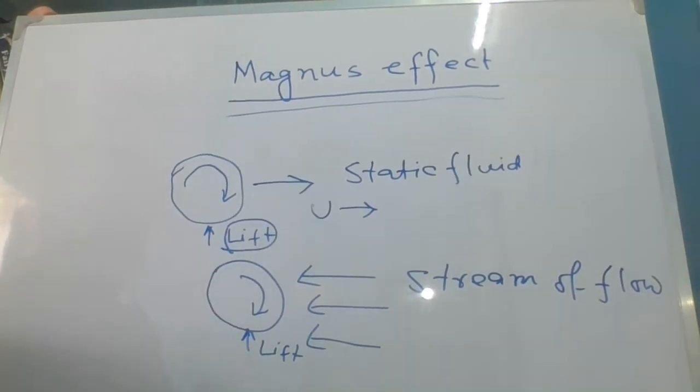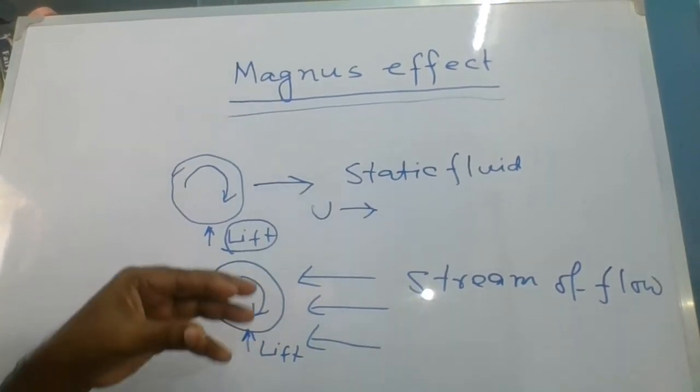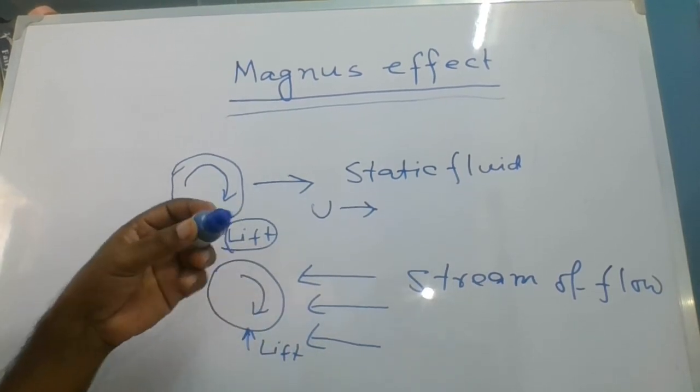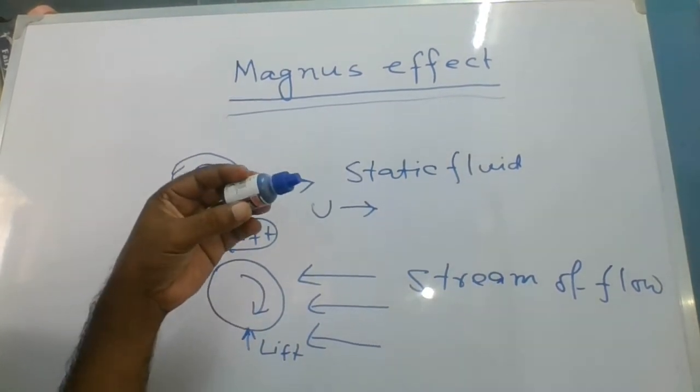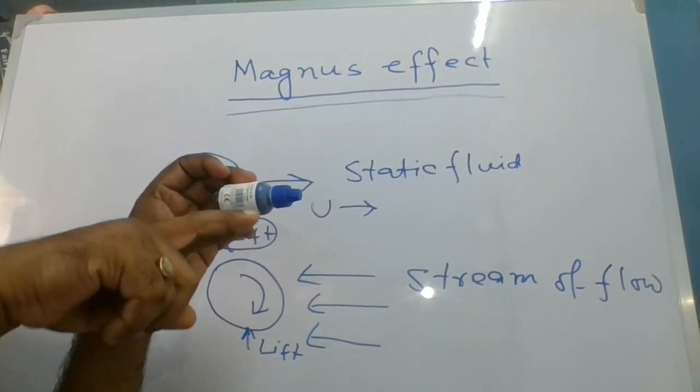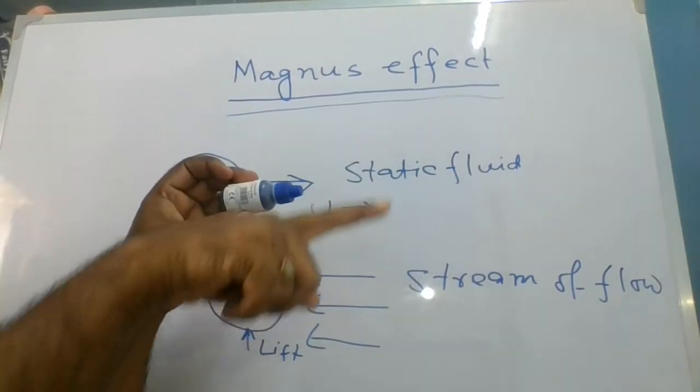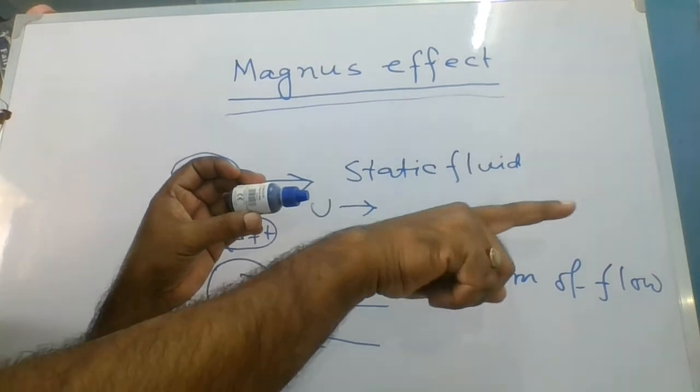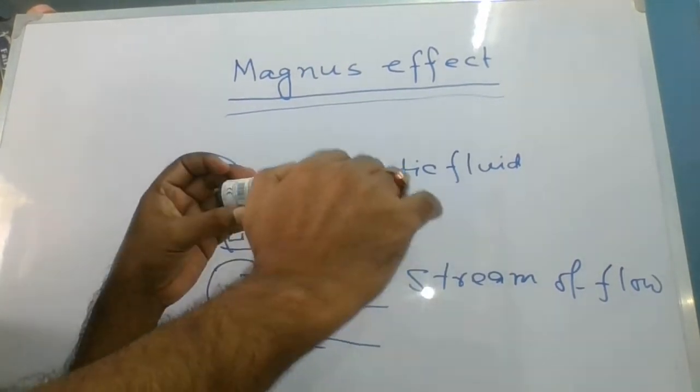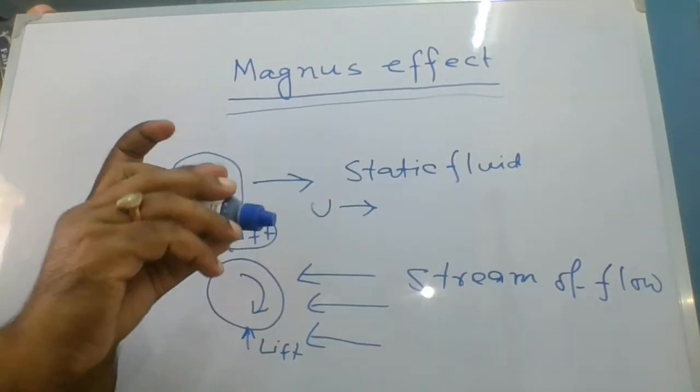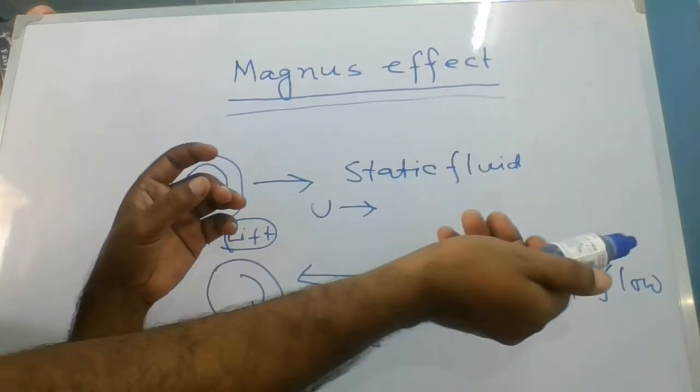Example 1: When a bullet is fired from a gun, the bullet spins and moves forward in a static fluid.